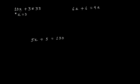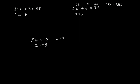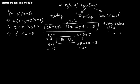For the second example, it's only and only true for a = 2: 6 × 2 = 12, plus 6 is 18 on the left hand side, and 9 × 2 = 18, so LHS equals RHS — but only for a = 2. For the third example, it's only true for x = 25: 5 × 25 = 125, plus 5 is 130, so LHS equals RHS only at x = 25. That makes these conditional equations.